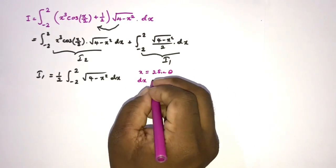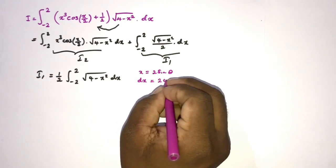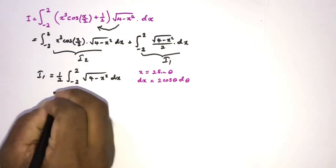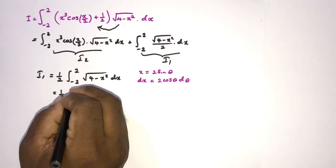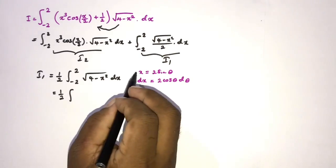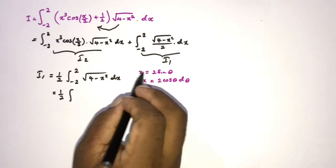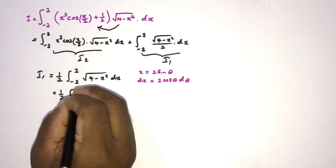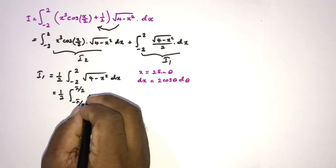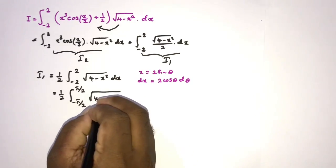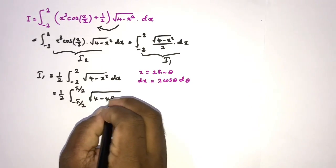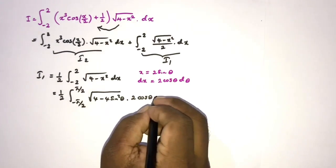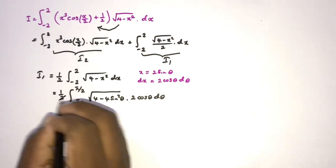Differentiating gives dx equal to 2 cosine of theta d theta. For the limits: when x equals minus 2, sine of theta equals minus 1 so theta equals minus pi over 2; when x equals 2, theta equals pi over 2. Under the square root, 4 minus x squared becomes 4 minus 4 sine squared theta.